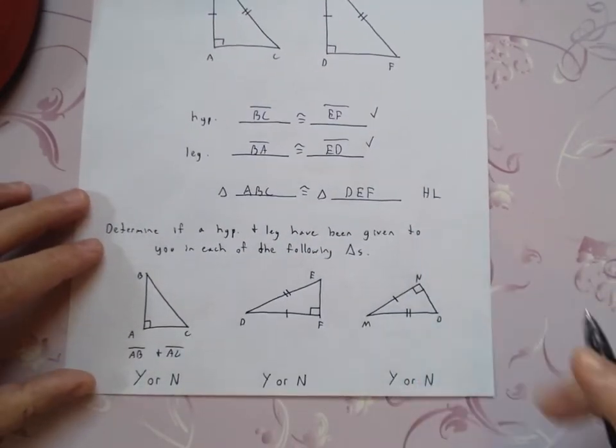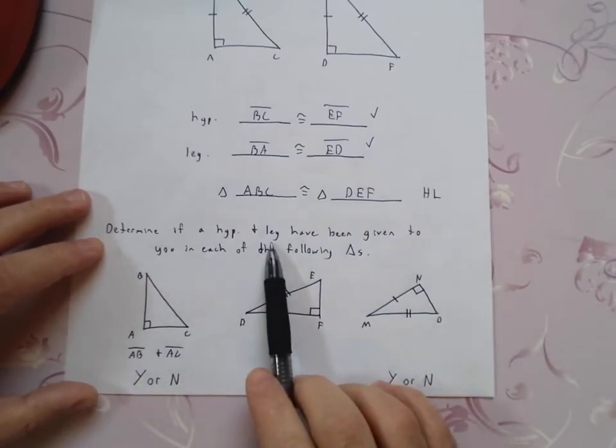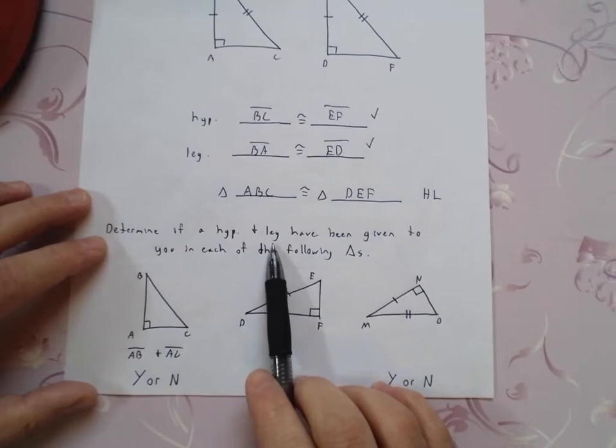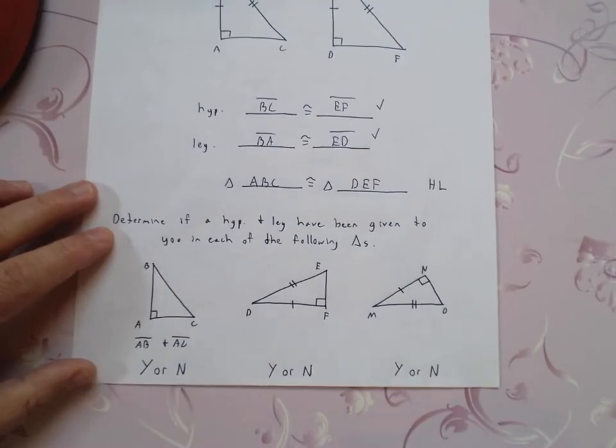So down below, I ask you a question. I want you to tell me if I gave you a hypotenuse and a leg. So it's either a yes or a no. Tell me, is the stuff that I have marked, or maybe I wrote to you, is it a hypotenuse? Is it a leg? So try that now.